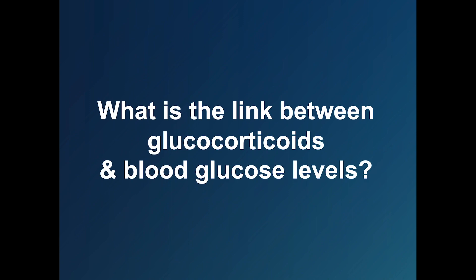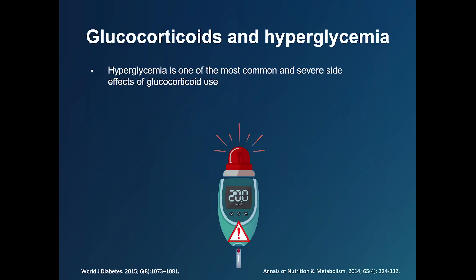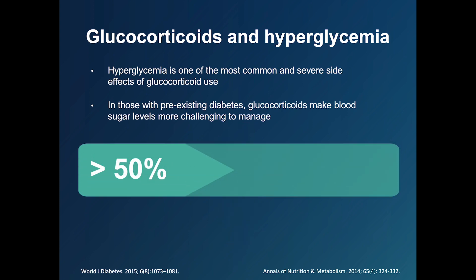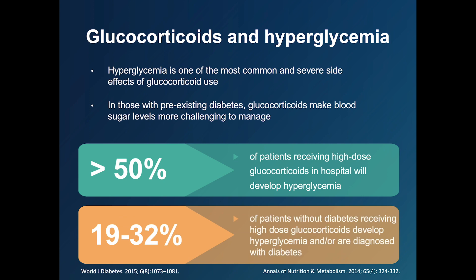What is the link between glucocorticoids and blood glucose levels? Hyperglycemia is one of the most common and most severe side effects of glucocorticoid use. In those with pre-existing type 1 or type 2 diabetes, glucocorticoids can increase blood sugar levels and make them much more challenging to manage. Studies have shown that over half of all patients receiving high-dose glucocorticoids in hospital will develop hyperglycemia, and even 19 to 32 percent of patients without diabetes will unexpectedly develop hyperglycemia when given higher doses.